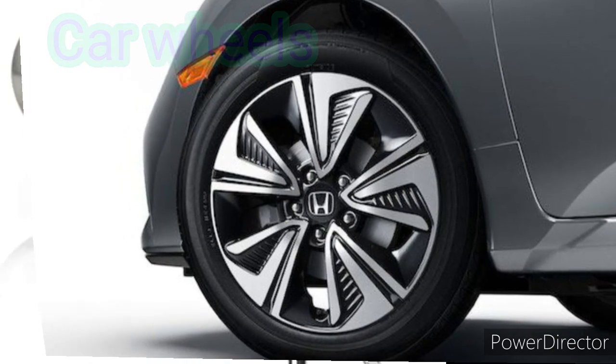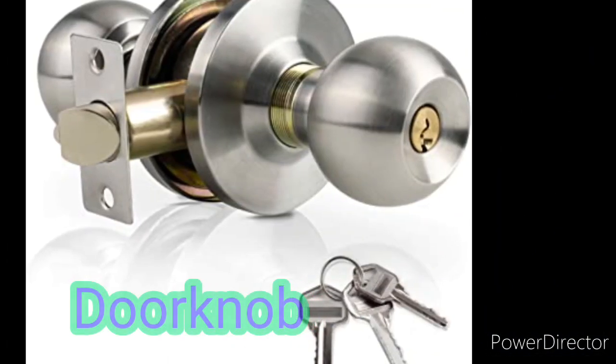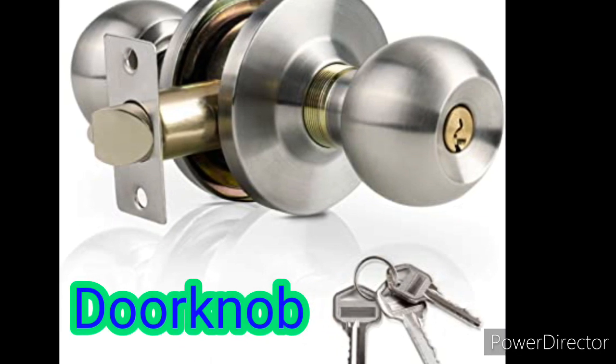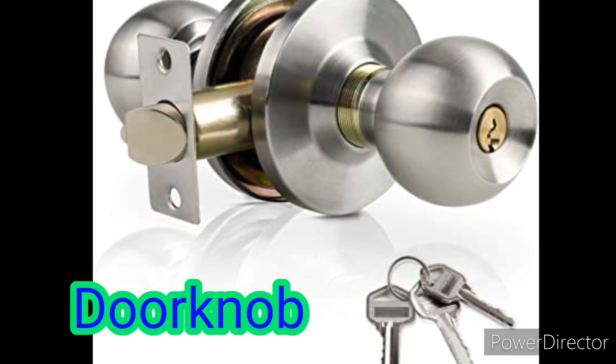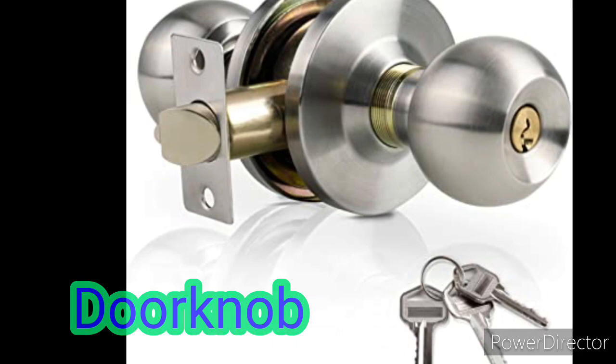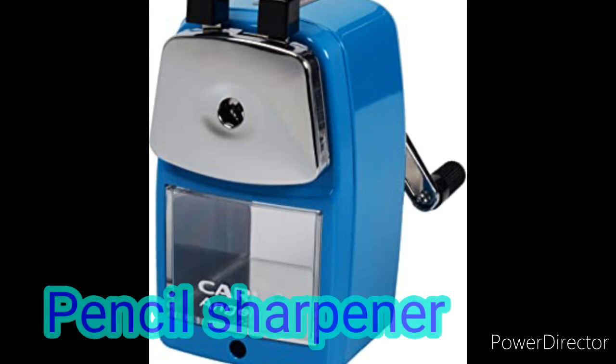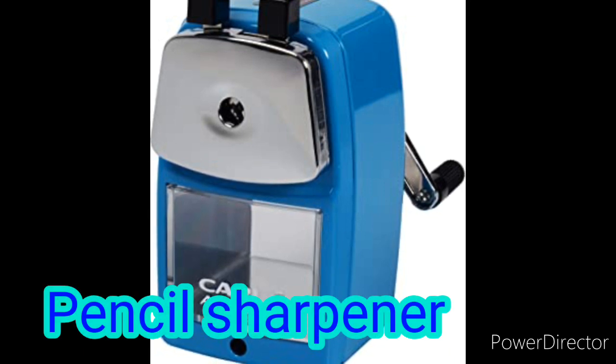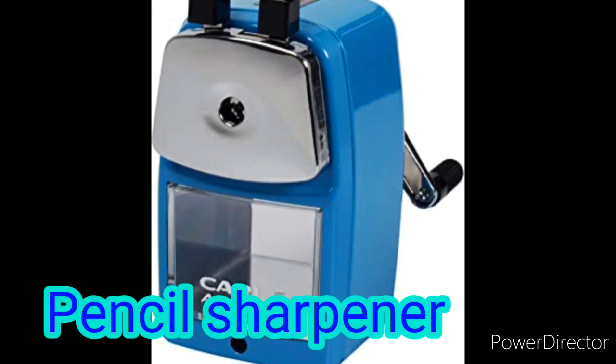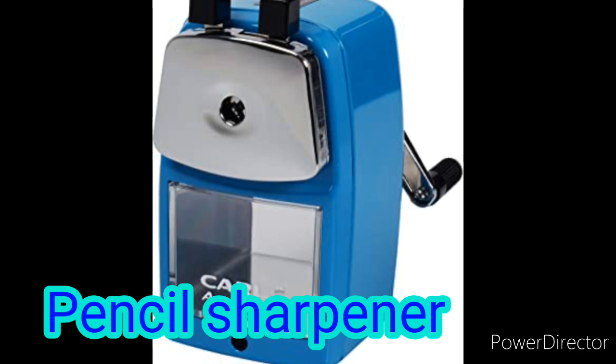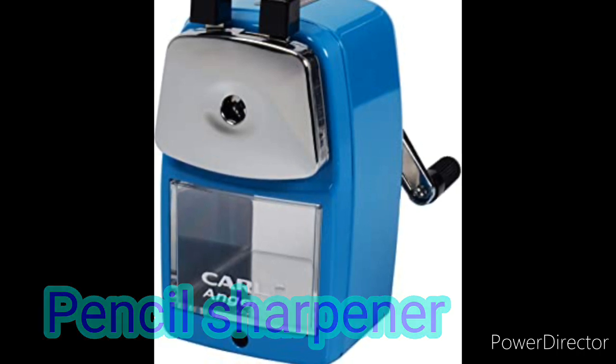A doorknob is a wheel and axle because when you turn the knob, it rotates an axle which then unlatches the door. A pencil sharpener has a wheel and axle because when you turn the crank or the handle, the axle carries the movement to the sharpener and it turns to sharpen the pencil.